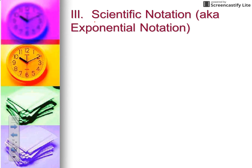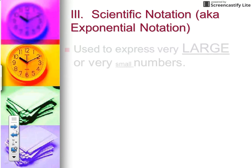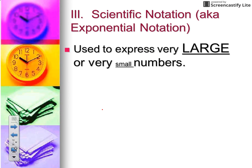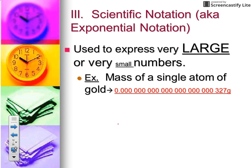Next in our notes we're learning about scientific notation, also known as exponential notation. We use scientific notation to express very large numbers or very small numbers. For example, in chemistry, if we were to describe the mass of a single atom of gold, the mass of a single atom of gold is extremely tiny.